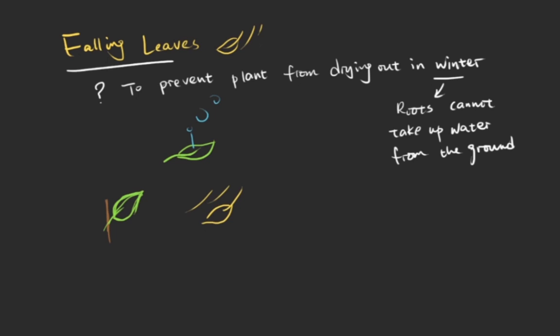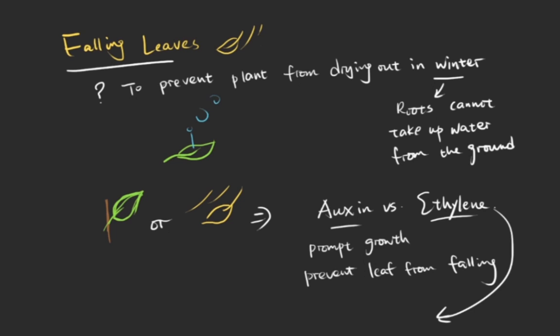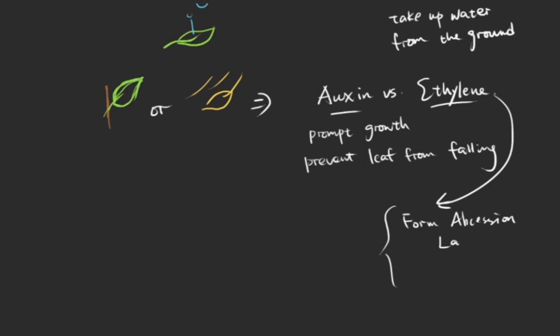But I'm gonna say once more, if the leaves stay on the tree or fall depends on the counteraction between auxin and ethylene, in which auxin promotes a plant's growth and prevents leaves from falling, and ethylene forms abscission layer and stimulates synthesis of enzymes that digest abscission layer.